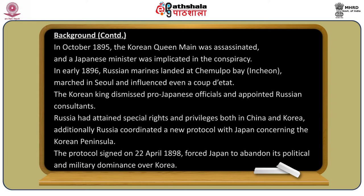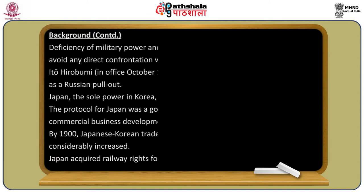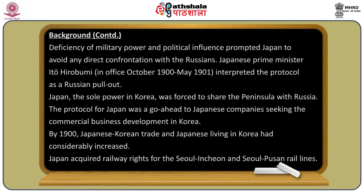In October 1895, the Korean Queen Min was assassinated and a Japanese minister was implicated in the conspiracy. In early 1896, Russian marines landed at Chemulpo and marched into Seoul, influencing a coup d'état. The Korean king dismissed pro-Japanese officials and appointed Russian consultants. Russia had attained special rights and privileges both in China and in Korea. Russia then coordinated a new protocol with Japan concerning the Korean peninsula.